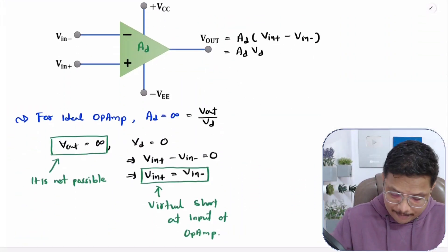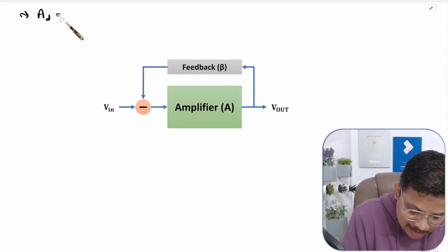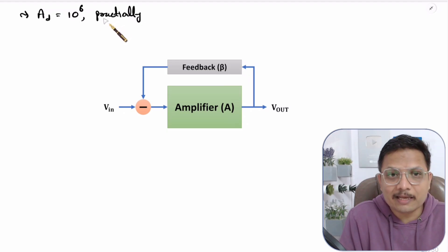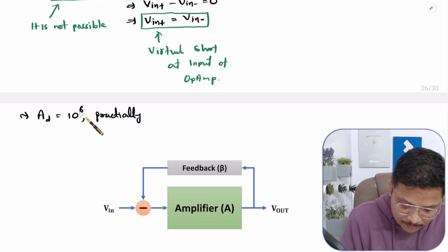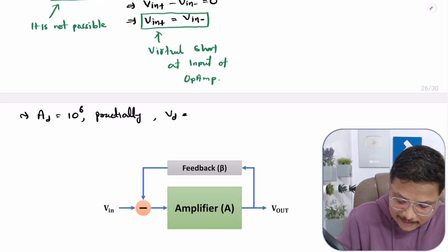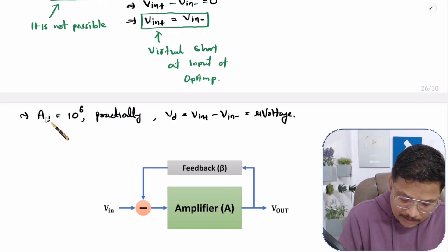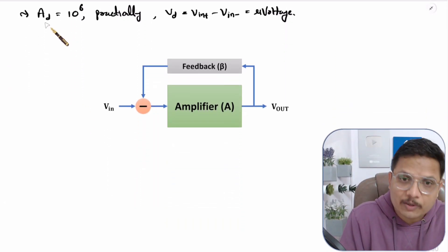But practically what happens? Practically, this differential gain is 10 to the power 6. So since the differential gain is 10 to the power 6 practically, V in plus and V in minus cannot be exactly equal. As the differential gain is in the order of 10 to the power 6, this differential voltage — which is V in plus minus V in minus — is there in terms of microvoltage. So it is not zero because differential gain is not infinite.